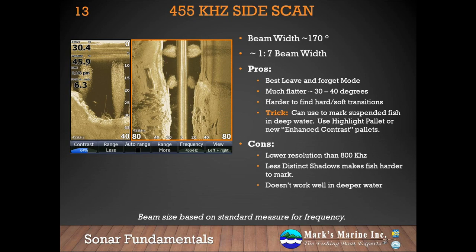The 455 kilohertz sidescan has a beam width of approximately 170 degrees. This is my favorite fire-and-forget mode. It can be sometimes difficult to spot fish, but with the newer Active 3-in-1 or Mega Plus transducers, you can still do it. It also has a fantastic throw range and a very minimal dead spot in the water. The beam dead spot is one of my primary complaints against higher frequencies, as it increases the area not covered by the sidescan beam.